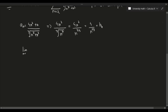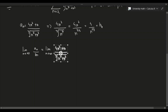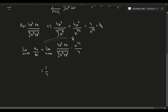According to the limit comparison test, we now compute the limit as n approaches infinity of aₙ over bₙ. Dividing by bₙ is the same as multiplying by its reciprocal, so we multiply by n^(1/3) over 4. We can pull the 1/4 out of the limit, giving us 1/4 times the remaining limit.